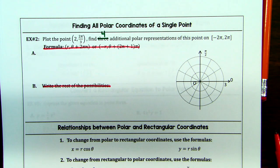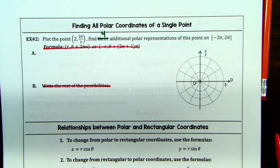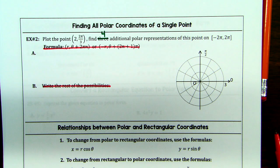We're going to find four additional polar representations of this point. What's really nice is that on the rectangular coordinate plane, a point has one name — you can't name it something else. But with polar coordinates, we can cross through the x-axis or the origin, use coterminal angles — you can add and subtract two pi forever.